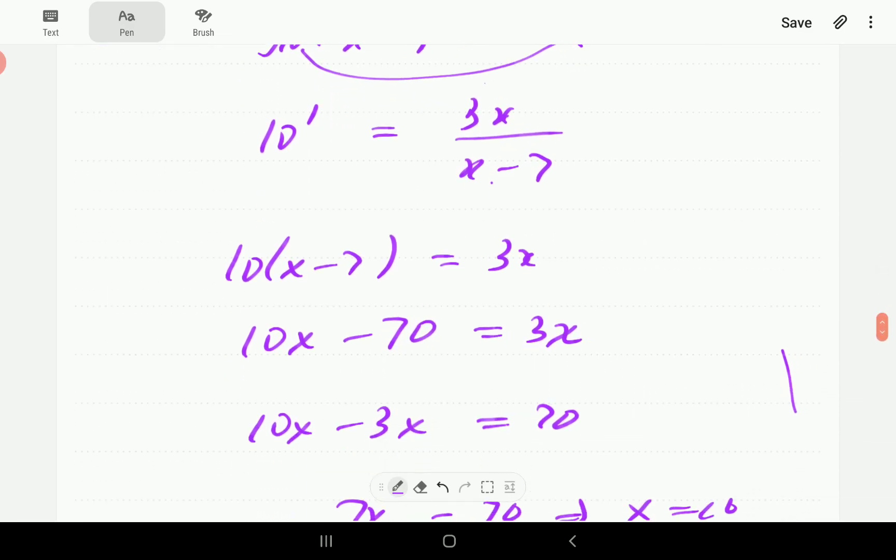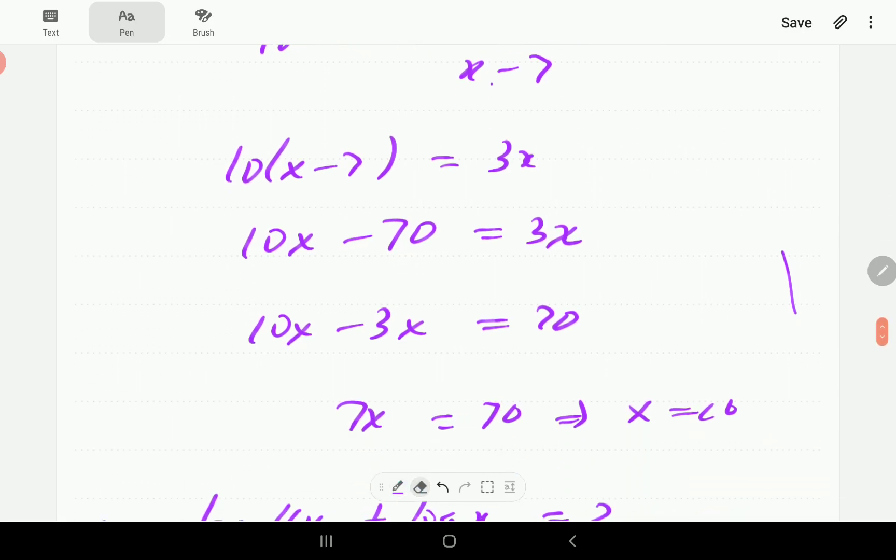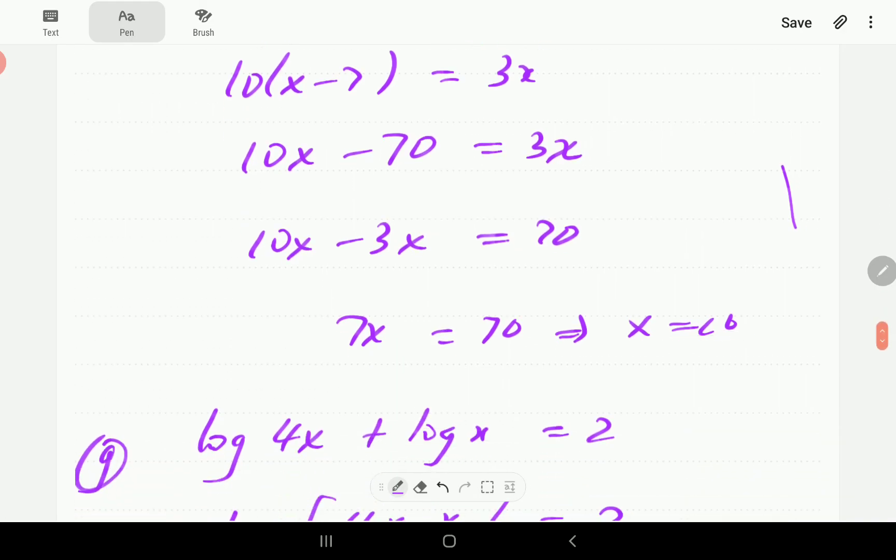If we rearrange this, it's going to give us 10x minus 70 is equal to 3x. Bring 3x to the left hand side gives us 7x. Take this to the other side, so that's going to give us x is equal to 10.